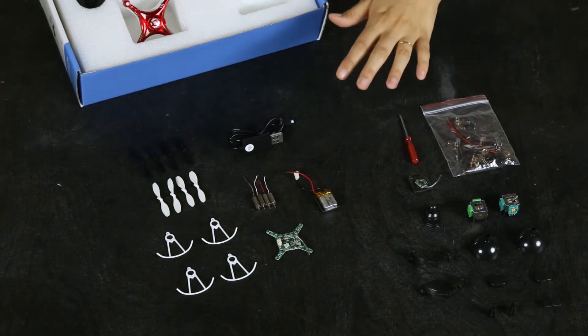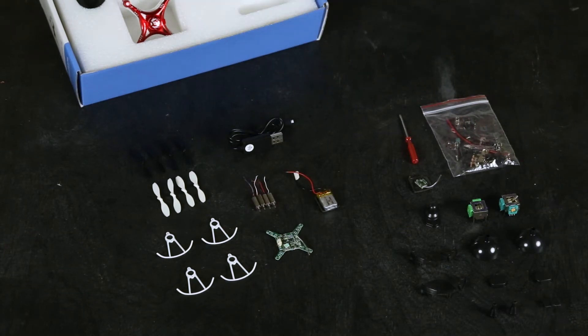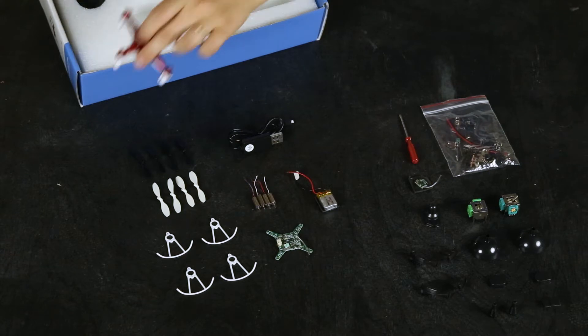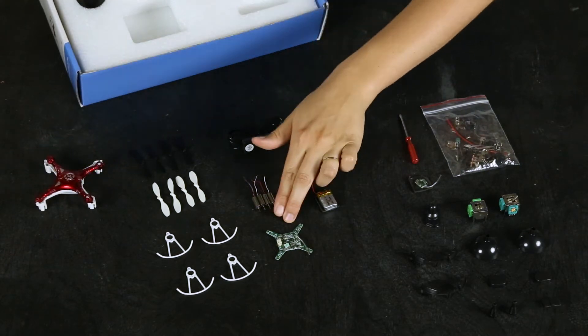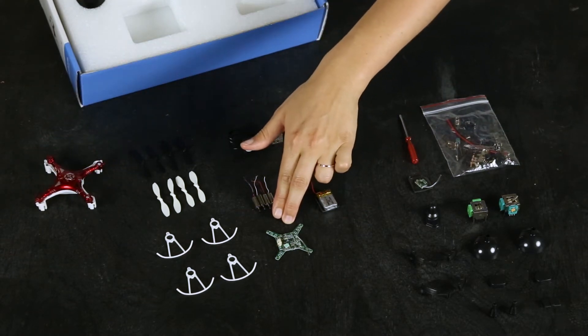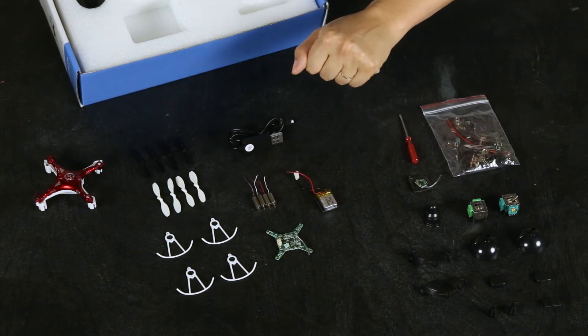Okay, so we've got everything here. Let's start with the quadcopter. Here is a quadcopter case, the quadcopter PCB which includes a gyroscope that's needed for the stability of your quadcopter.